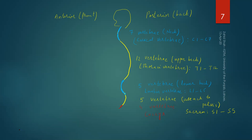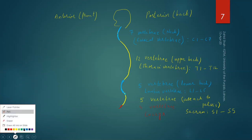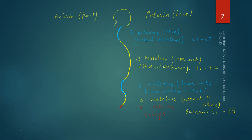You might have noticed that the first curve — the cervical curve — and the third one, the lumbar curve, are convex on the anterior side and concave on the posterior side. Such a curve is called lordosis, or a lordotic curve.